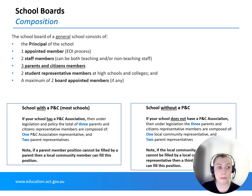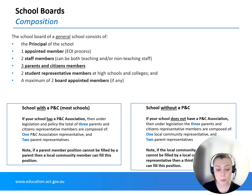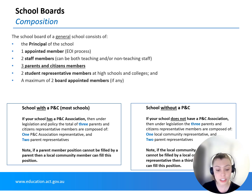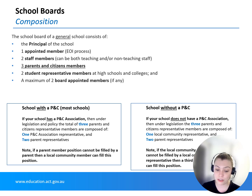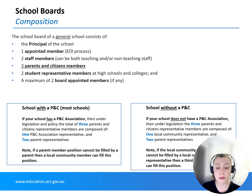The particular makeup of a school board depends on whether or not a school has a Parents and Citizens Association, because that slightly changes the type of member that sits as a representative member on the school board. Student members represent school students on the board for high schools and colleges. Staff members represent school staff on the board, including teachers and administrative staff. Appointed members are an important part of the school board and are essential as they provide an independent voice to the board outside of representative members.